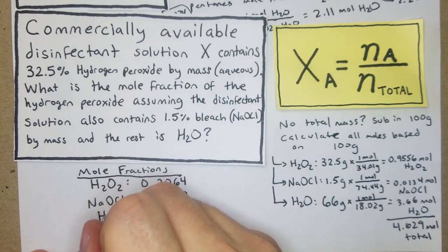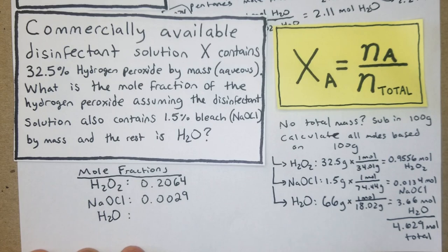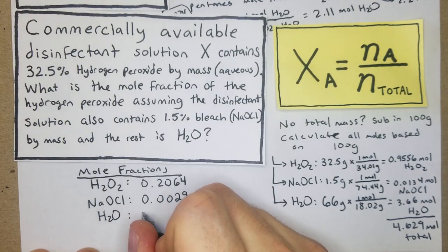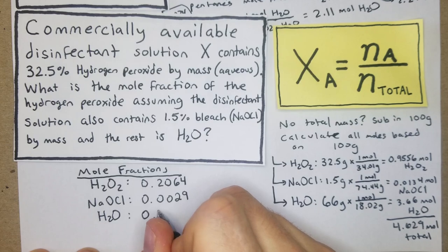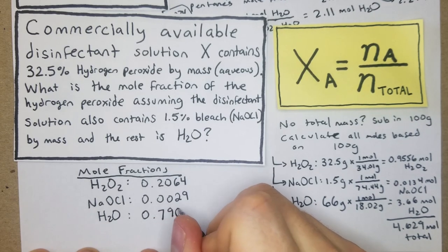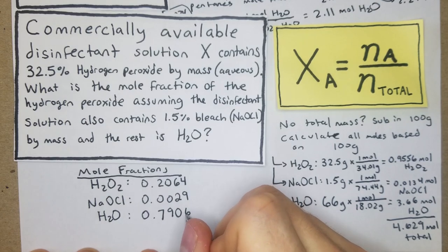And then finally for our water, H2O, we're going to have our moles, which is 3.66, divided by 4.629, and that's going to give us 0.7906.